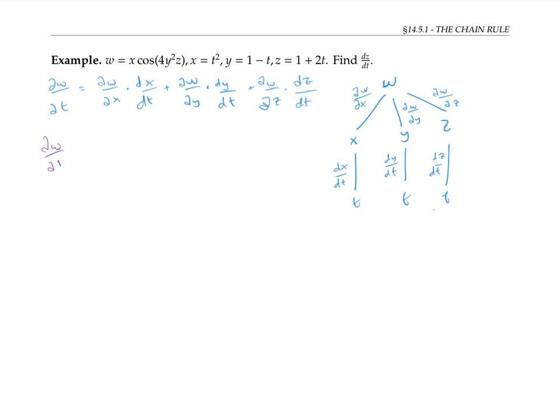Partial w partial x is cosine of 4y²z. Partial w partial y is negative x sine 4y²z times 8yz.